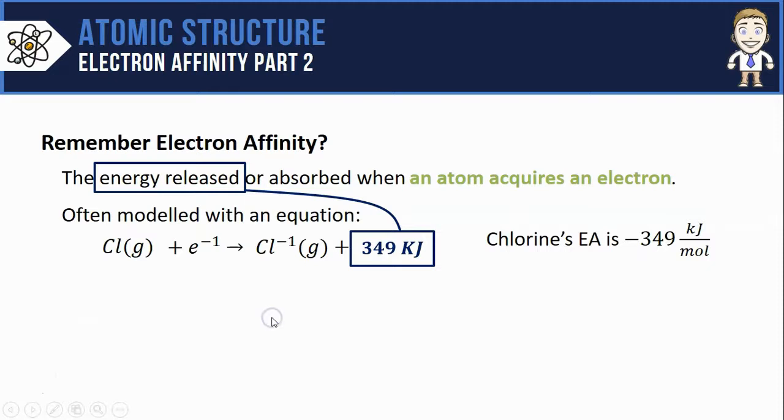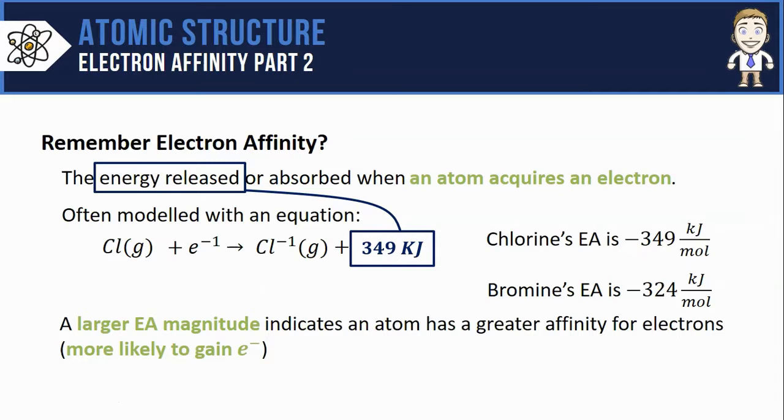If you did the same thing with a bromine atom you'd find that it only releases 324 kilojoules of energy, and a larger electron affinity magnitude tells me that an atom has a greater affinity for electrons or is more likely to gain them. Here that means that chlorine is the atom that's more likely to gain electrons.